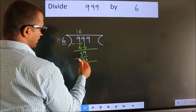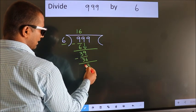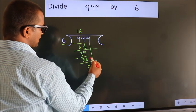Now, we subtract. We get 3. After this, bring down the beside number.